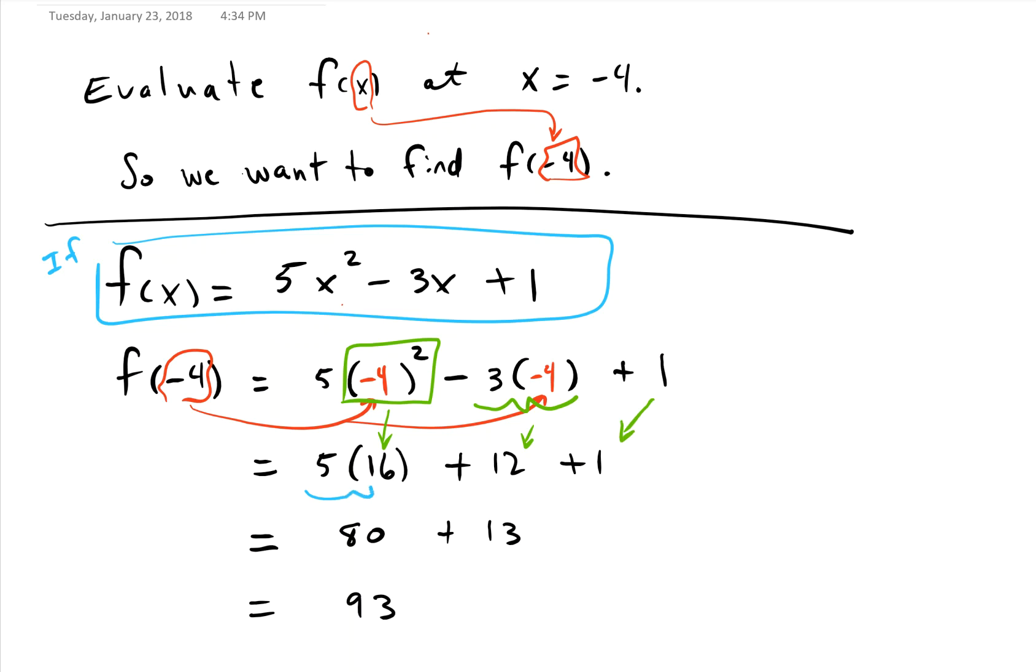5 times 16 gives us 80, and 12 plus 1 gives us 13, and 80 plus 13 gives us our final answer of 93. Hope that helps. Thanks for watching.